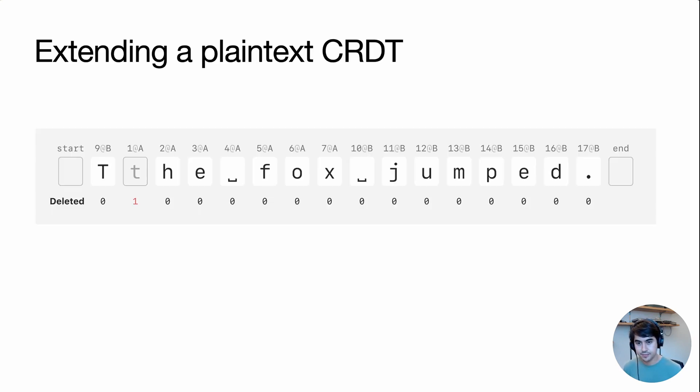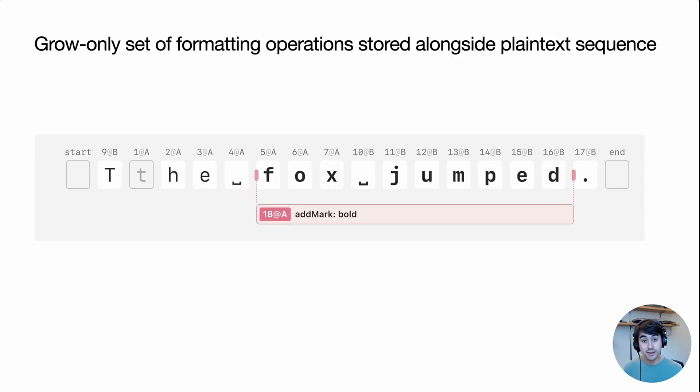And that brings us to our proposed algorithm, Paratext. We do extend the plain text CRDT in Paratext, but in a very particular way that ensures intent preservation and conversions. A first key idea is that we maintain a set of formatting operations alongside the plain text sequence. For example, here we have an operation to add bolding to part of the sequence. The operations start and end on either side of these characters. You can see here that this operation is attached to these particular characters in the sequence. It's also very important that this set of formatting operation only grows. So, when we remove formatting, we don't remove operations. Instead, we add more operations to represent removing formatting.